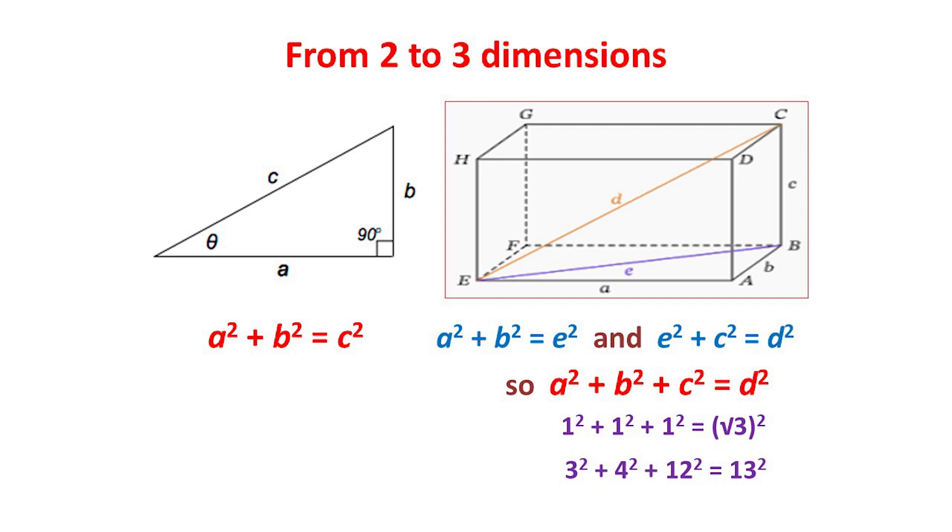For a cube with side 1, we have 1² + 1² + 1² = (√3)². So any diagonal of a cube has length √3. An example with whole number lengths is 3² + 4² + 12² = 13².